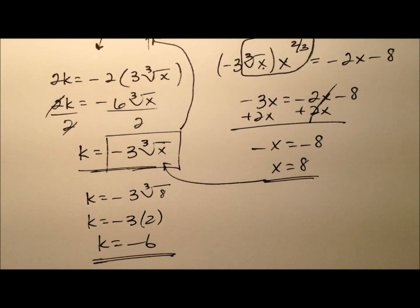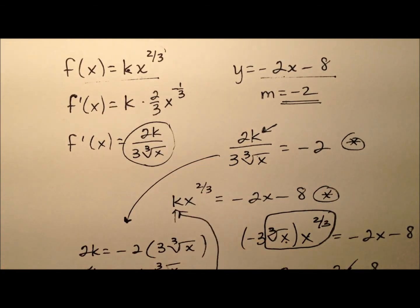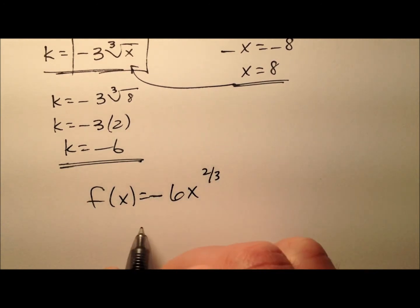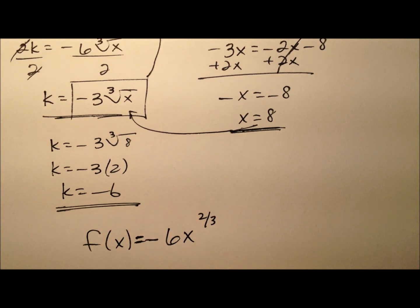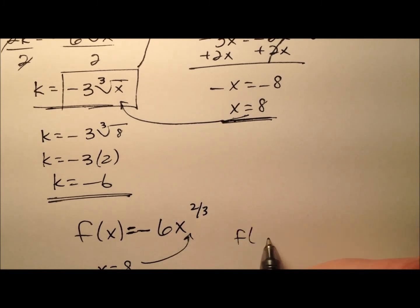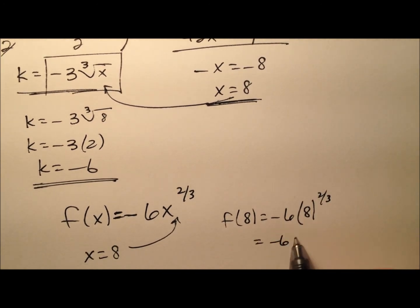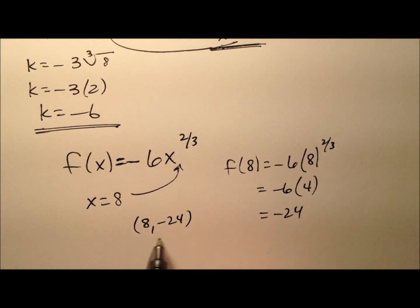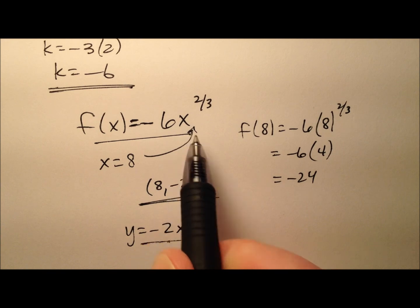Let's wrap this problem up. We now know k is negative 6, so we can rewrite the function as f(x) equals negative 6x to the two-thirds. The point of tangency occurs at x equals 8. Finding the ordered pair, f(8) equals negative 6 times 8 to the two-thirds. Since 8 to the two-thirds equals 4, the y-value is negative 24. So the point of tangency is (8, −24), and the line y equals negative 2x minus 8 is tangent to this function at that point.